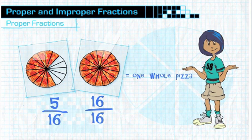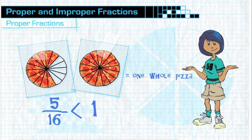Comparing these two pizzas, I think you can see that 5-sixteenths is less than 16-sixteenths, and 16-sixteenths equals 1. Therefore, 5-sixteenths is less than 1.